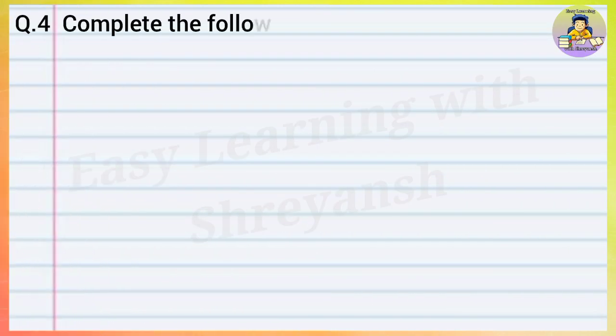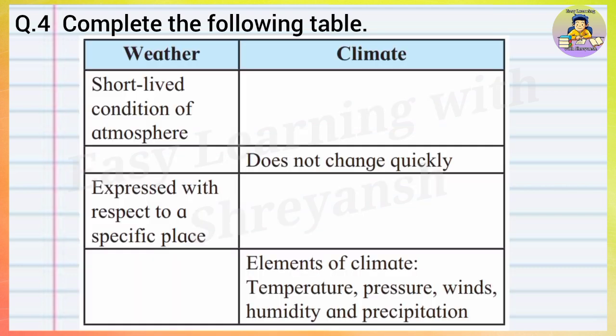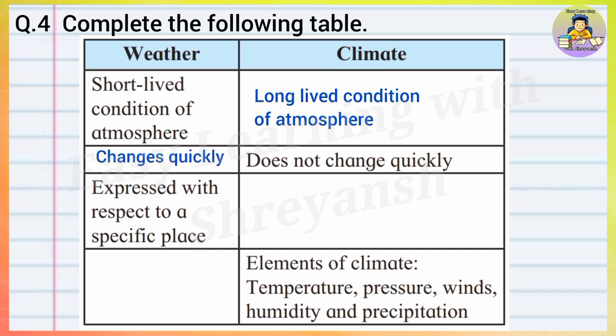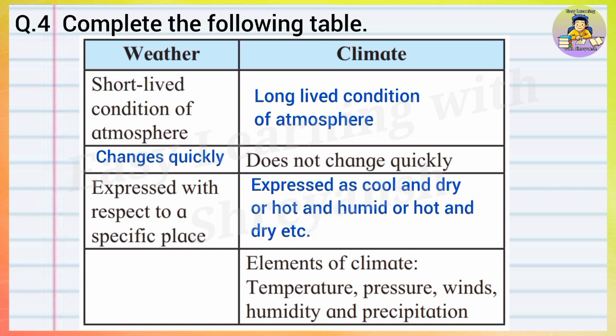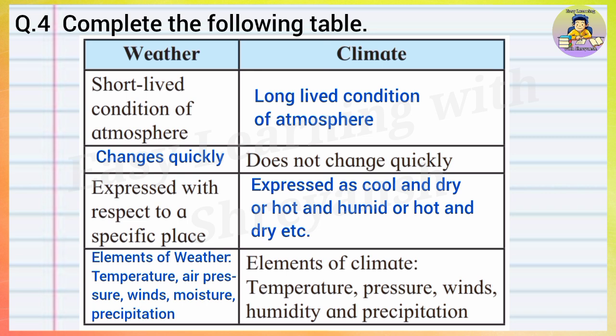Question number four: Complete the following table. Weather: short-lived condition of atmosphere, changes quickly, expressed with respect to a specific place. Climate: long-lived condition of atmosphere, does not change quickly, expressed as cold and dry or hot and humid or hot and dry, etc. Elements of weather: temperature, air pressure, winds, moisture, precipitation. Elements of climate: temperature, pressure, winds, humidity, and precipitation.